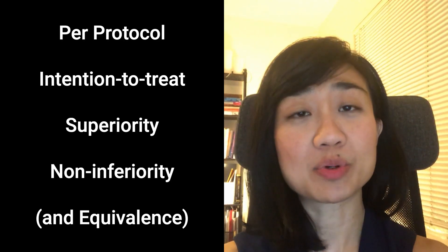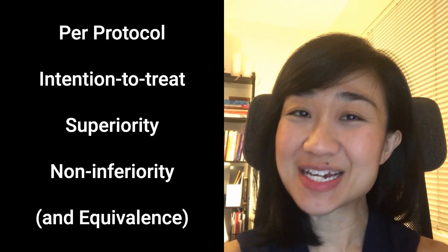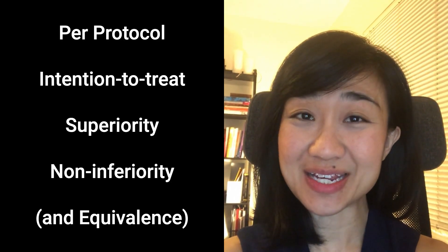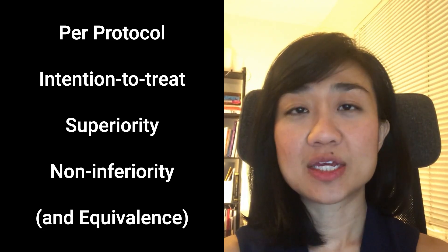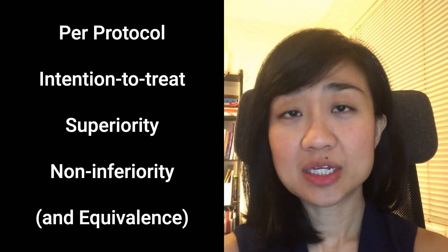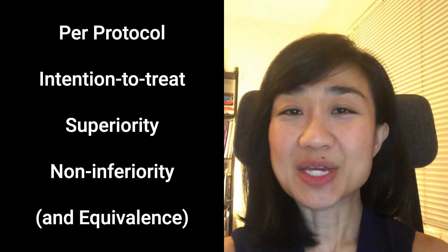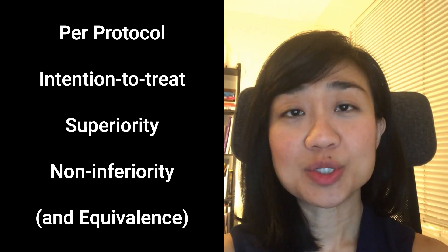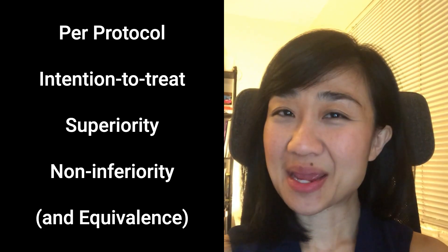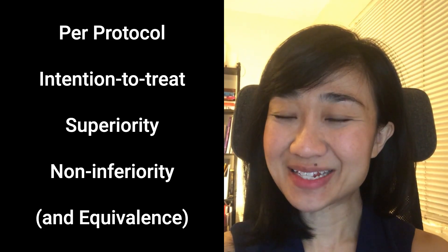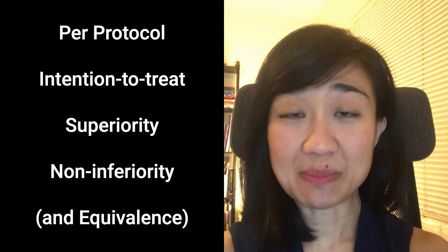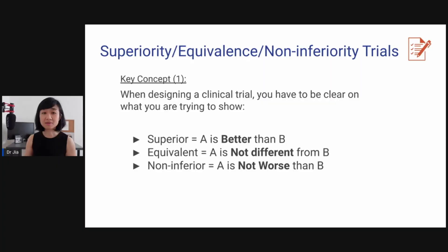When you read research papers that look at clinical trials, sometimes you see words such as protocol, intention to treat, superiority, and inferiority. If you don't understand these terms, you will have trouble interpreting the results. Today, I will show you what these terms mean. And once you understand that, reading a research paper will be much easier for you.